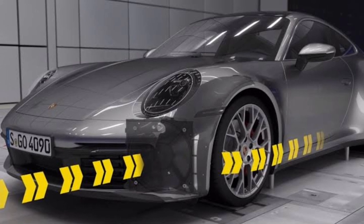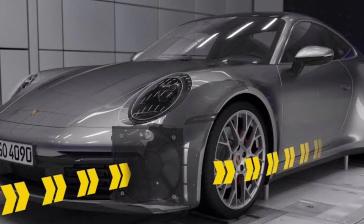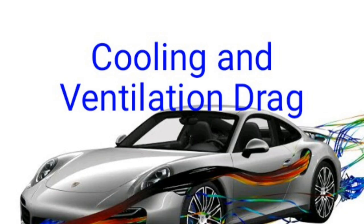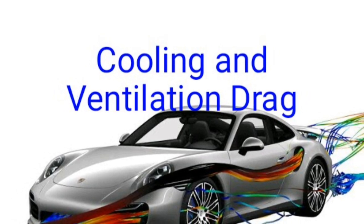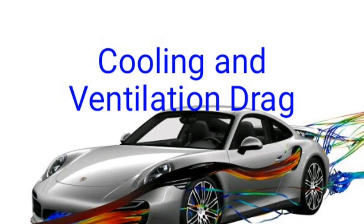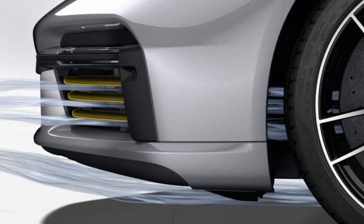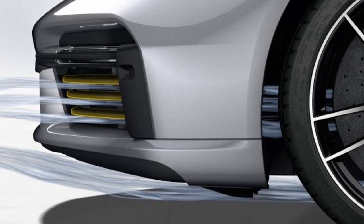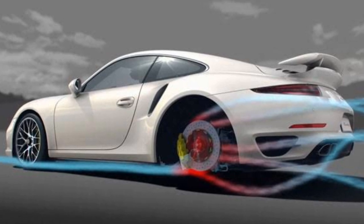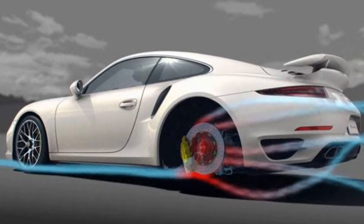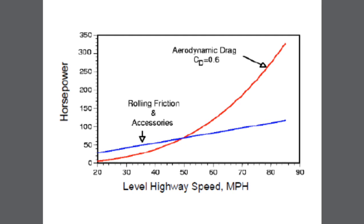In road vehicles there is an additional drag called cooling and ventilation drag. It is caused by the heat transfer devices used in an automobile, including radiators, turbo intercoolers, AC condensers, and brake cooling systems.